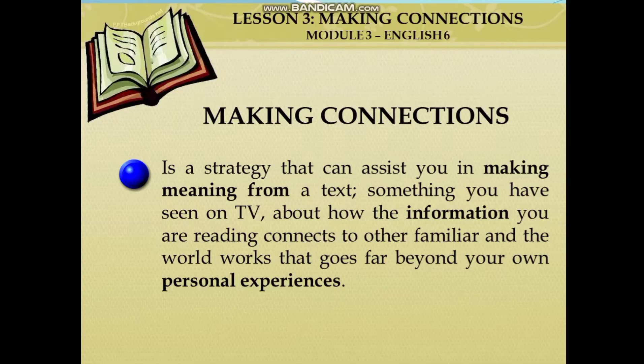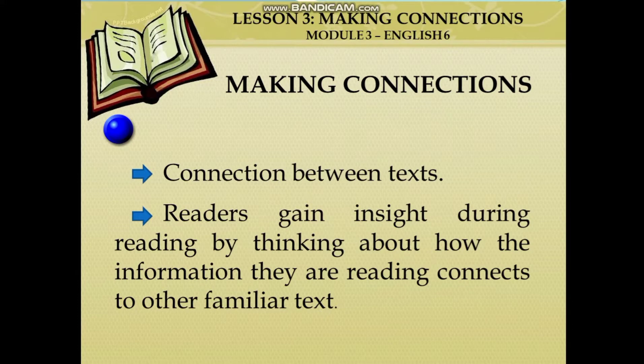As you read, you may relate it to your own life experience, to the book you have read before, and even to the happenings in the world. Making connections is a strategy that can assist you in making meaning from a text — something you have seen on TV, how the information you are reading connects to other familiar texts, and the world that goes far beyond your own personal experiences. There are three connections. The first is a connection between texts. Readers gain insight during reading by thinking about how the information they are reading connects to other familiar texts. That's what we call text-to-text.